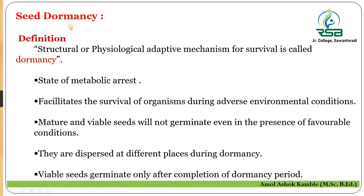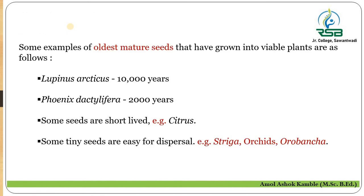Examples of oldest mature seeds that have grown into viable plants include Lupinus arcticus at 10,000 years and Phoenix dactylifera at 2,000 years. Some seeds have short-lived time spans, for example citrus, and some tiny seeds are easy to disperse, for example Striga, orchids, and Orobanche.